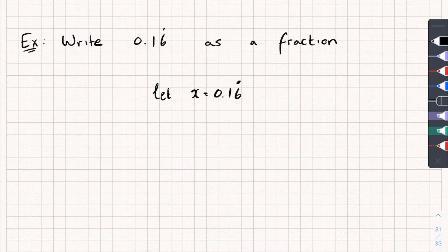From here, we're going to move this recurring part to the other side of the decimal point. So to do that, I'm going to times it by 100. So I've got 100x is equal to, well, it would be 16.6 recurring.